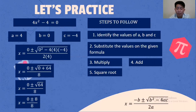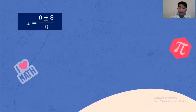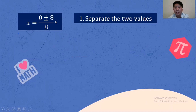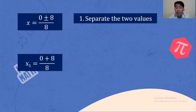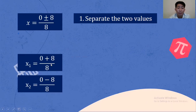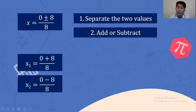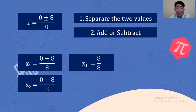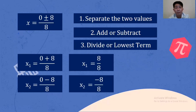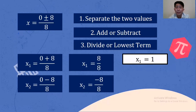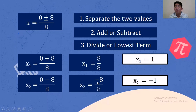So we have 0 plus or minus 8 over 8. Separating the two values: X sub 1 is 0 plus 8 over 8, and X sub 2 is 0 minus 8 over 8. Adding and subtracting: 0 plus 8 is 8 over 8, and 0 minus 8 is negative 8 over 8. Dividing: 8 divided by 8 is 1, and negative 8 divided by 8 is negative 1. The values of X are 1 and negative 1.